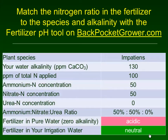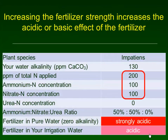For example, with impatiens, 130 ppm of water alkalinity, and 100 ppm of total nitrogen of which half is ammonium and half is nitrate: the fertilizer grown in pure water with no alkalinity would have an acid effect. But if we combine the acidity of the fertilizer with the 130 ppm alkalinity of the irrigation water, they're going to balance out and there will be a neutral effect.